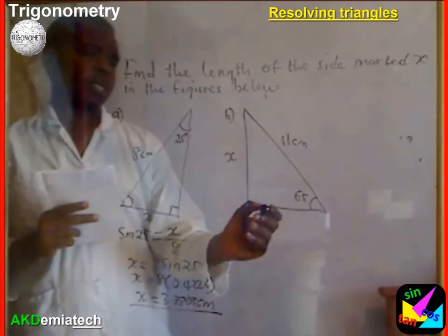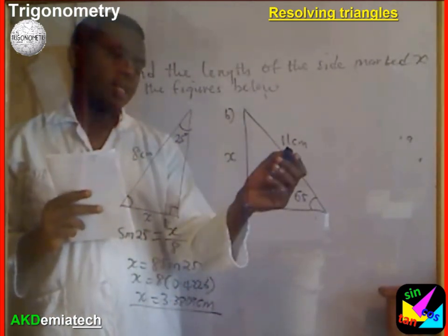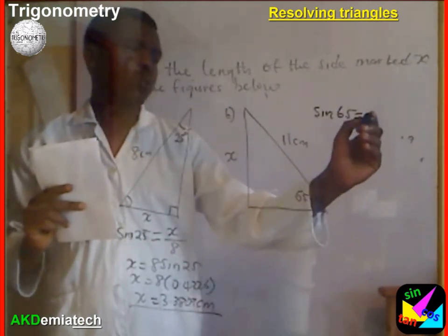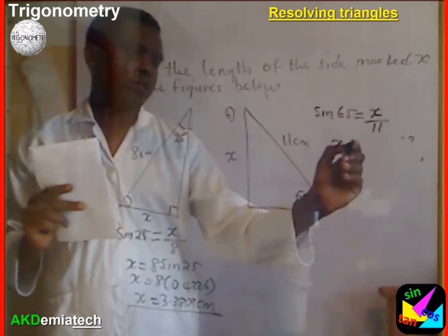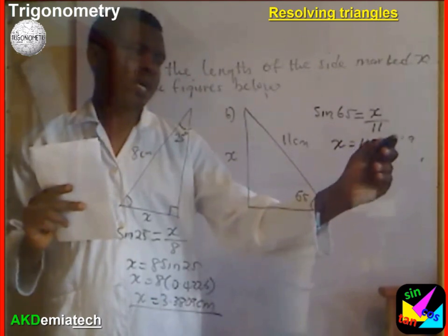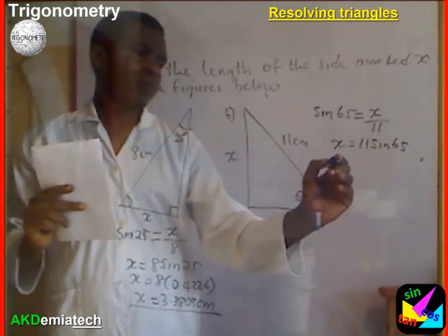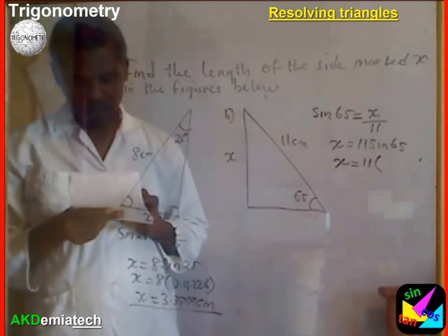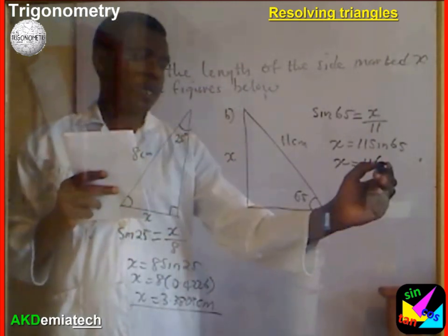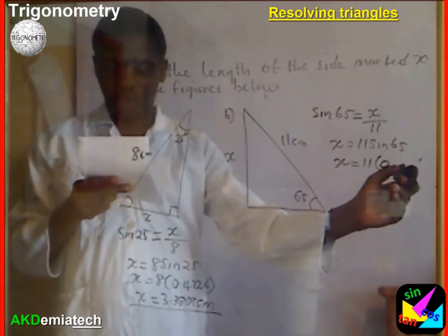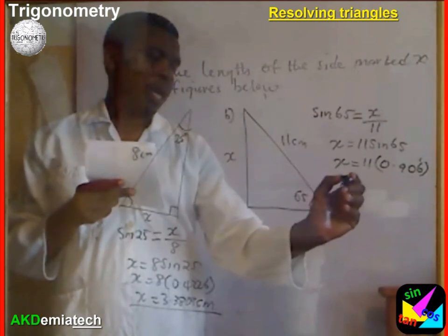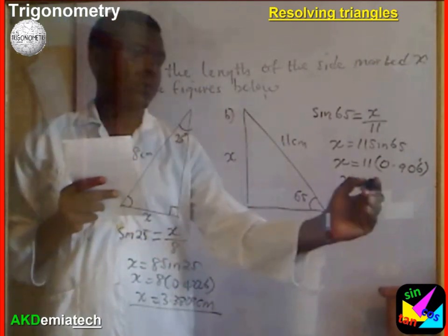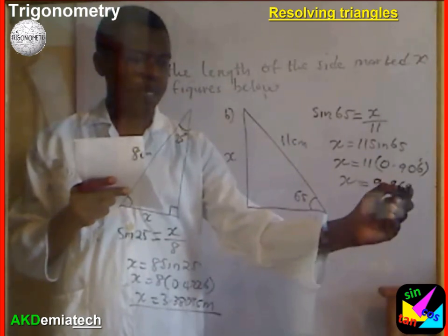For the second figure, this is the opposite and this is the hypotenuse, so I use sine. Sine 65 equals x over 11, so x equals 11 times sine 65. This gives x equals 9.969 centimeters.